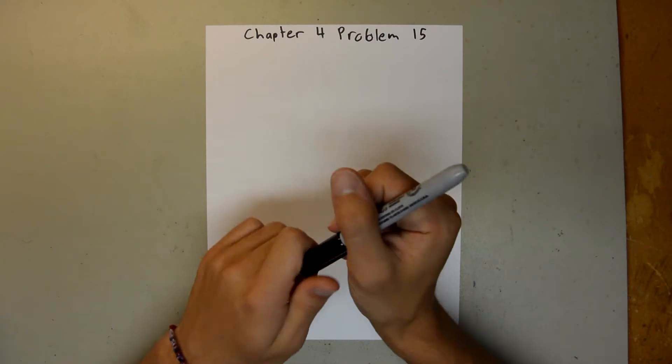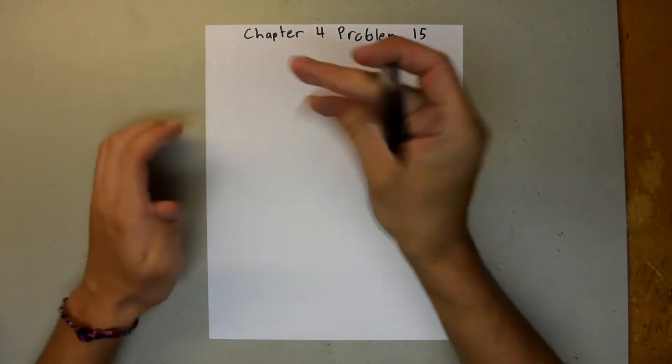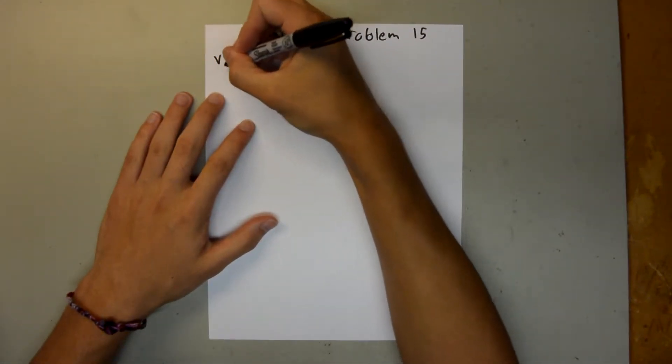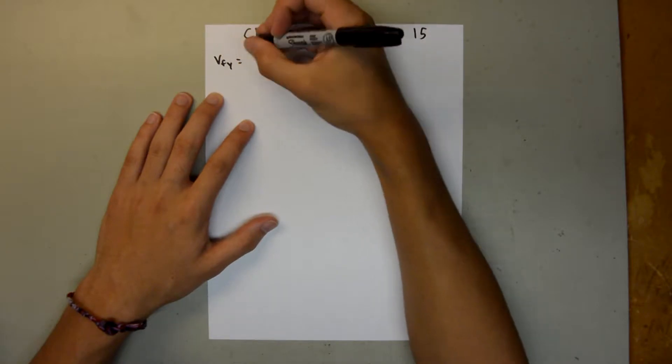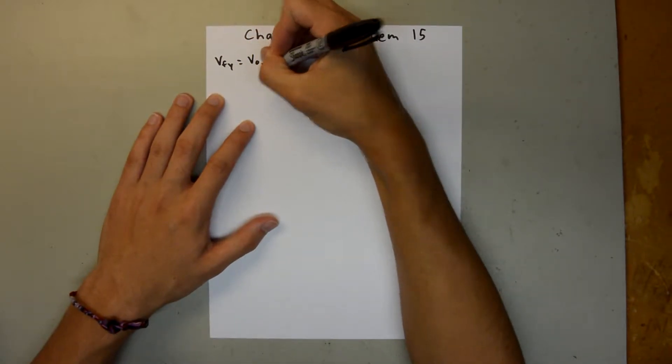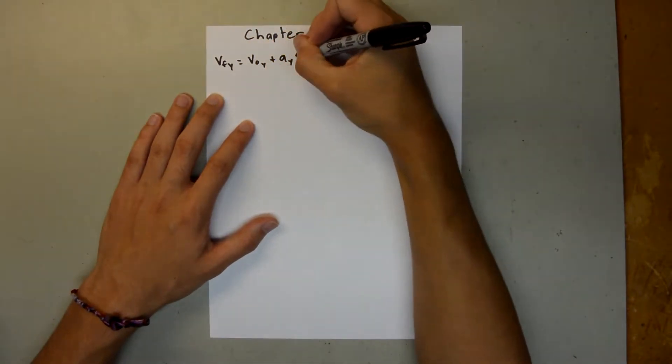So we can use the kinematics equation. Velocity final in the y is equal to velocity initial in the y plus the acceleration y times t.